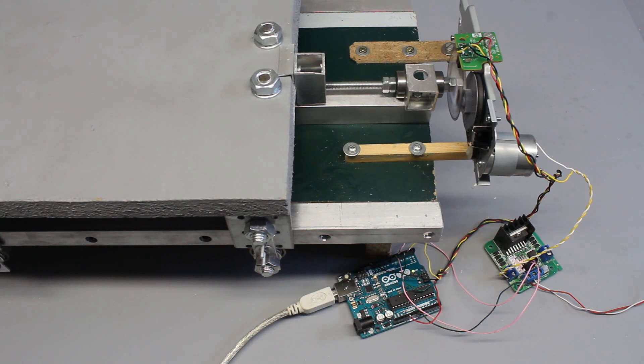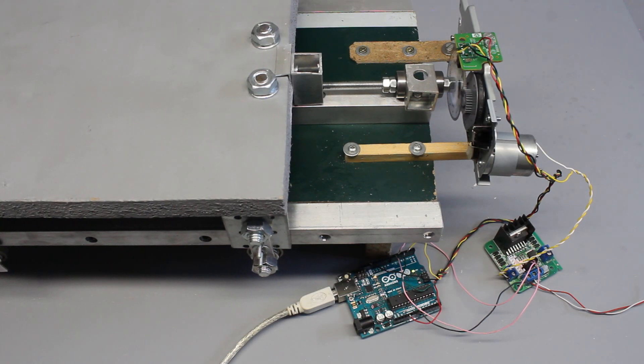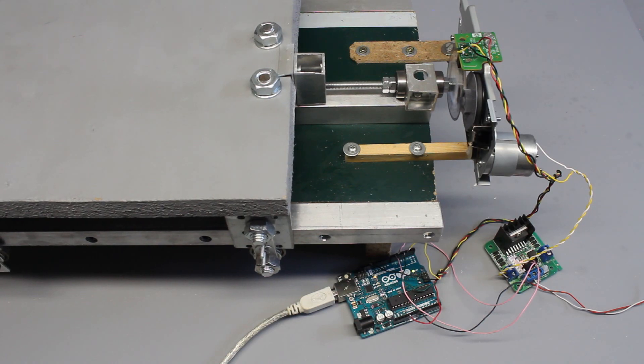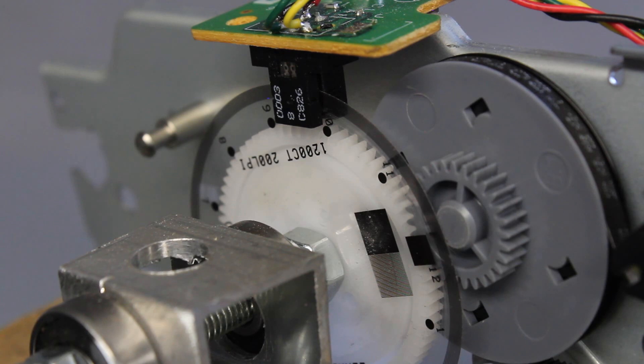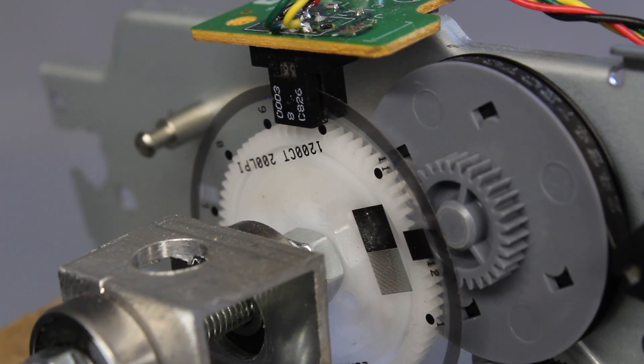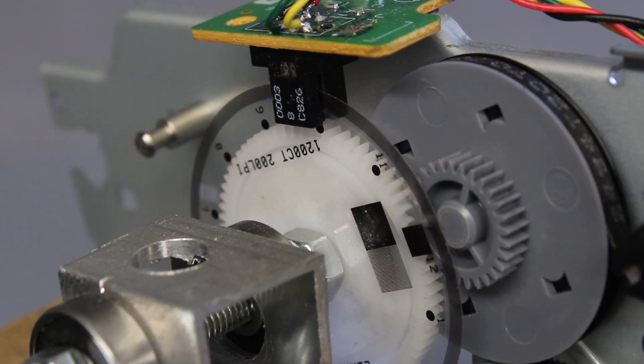The working principle of this type of rotary encoder has been treated in a previous video. The fine line pattern on the sensor disc results in 3000 pulses per revolution.